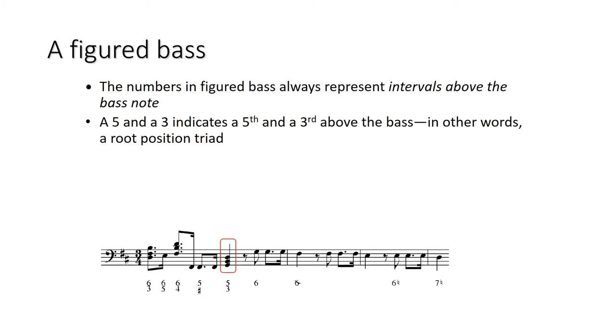All right, so first of all, we see, if you see a five and a three, that would be a fifth and a third above the bass. So that's a root position triad. So this G here, a third and a fifth above that gives you a root position triad.